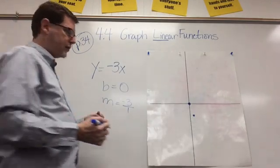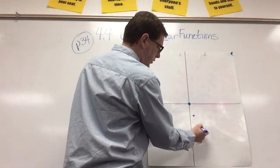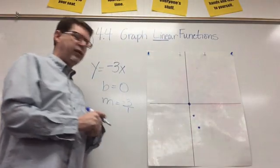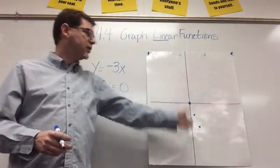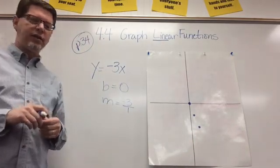I can do it again. Down 1, 2, 3, and to the right, 1. There's another point. I have three points. I can use my ruler to draw the line through those points and then put an arrow on each end. And that is the graph of Y equals negative 3X.